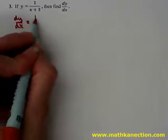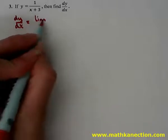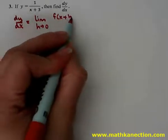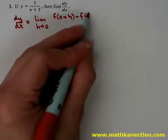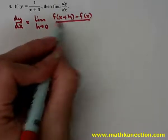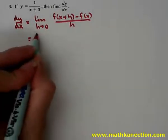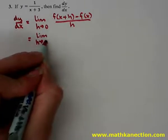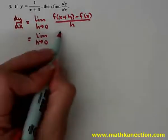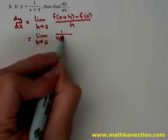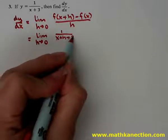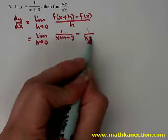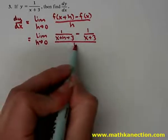Now we're going to find dy/dx, which is just different notation for finding the derivative, so that's the same formula: limit as h approaches 0 of f of x plus h minus f of x, all over h. Taking x plus h and putting it into the function gives 1 over x plus h plus 3, minus the original function 1 over x plus 3, all over h.